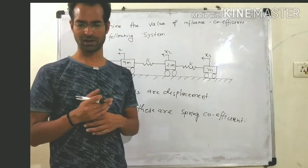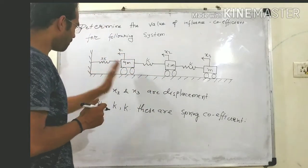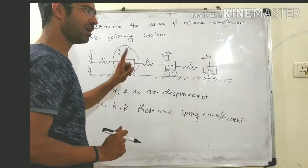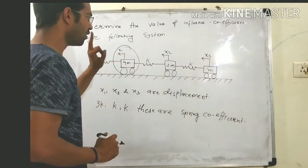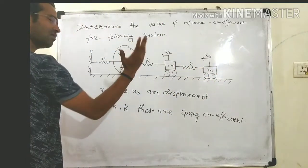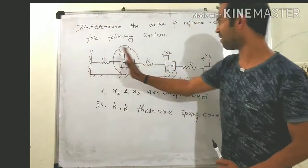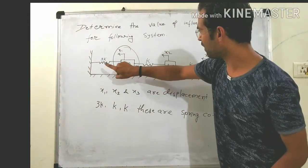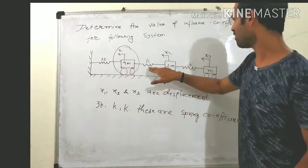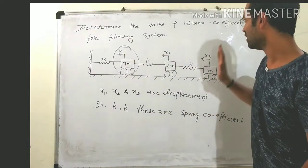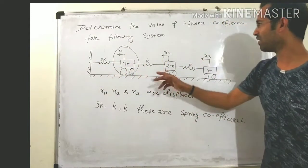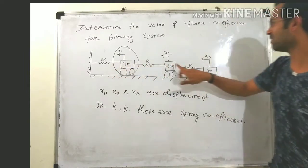First of all, we will apply one unit force on this system. I will apply a unit force F1 equal to 1, and at the same time we will assume there is no effect on 2M and M. If I push the system by a unit force, then 3K will compress. But there will be no change in 2M and M. Similarly, if I push 2M in this direction, then there will be an effect on K and 3K, but no effect on the last K — it will be totally free.